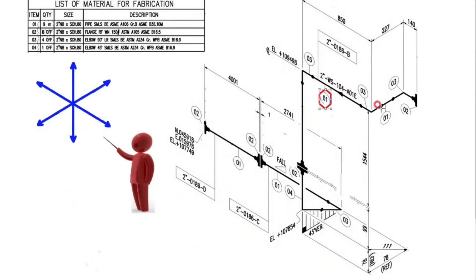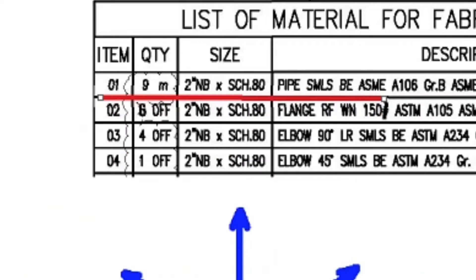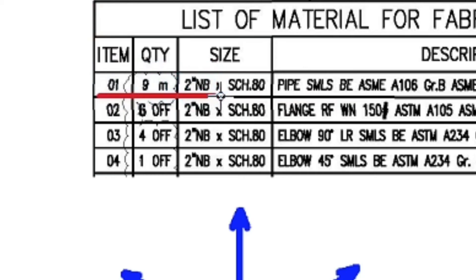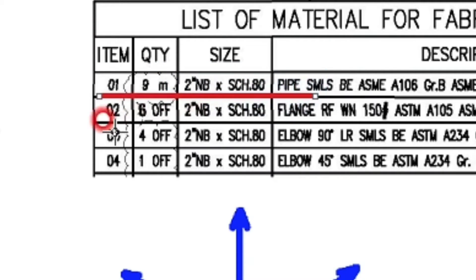These are details number 1. We look at the material list. Detail number 1: 9 meters, 2 inch, schedule 80, pipe, ASME A106.